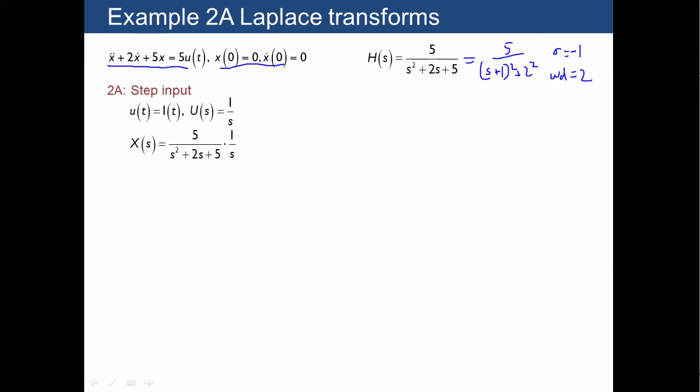And what do we do with that information? Well, this tells us that we're going to have a step response with a final value of 1. So it's going to head towards 1, and basically we already know what x of t is going to look like. Start with zero initial conditions, and it's going to oscillate a little bit and head towards 1.